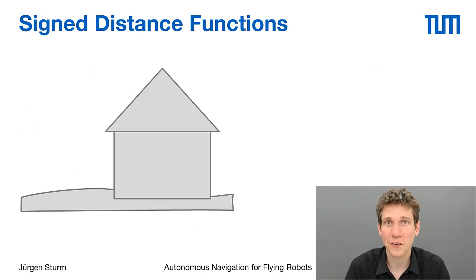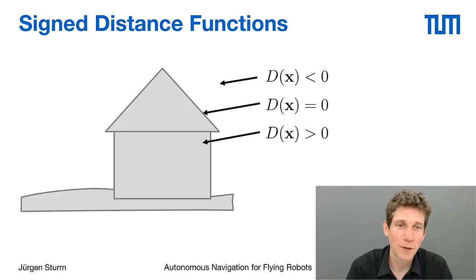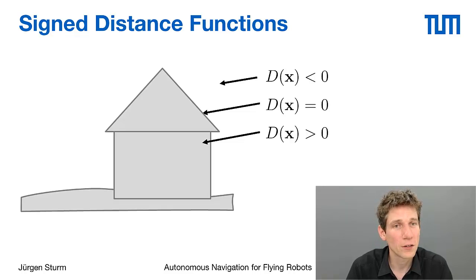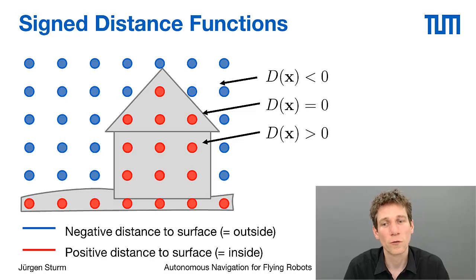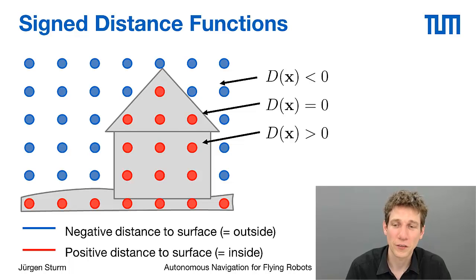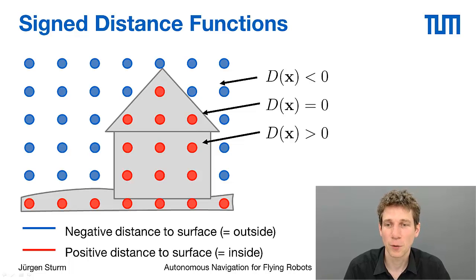Now let's look at what signed distance functions actually are. Imagine we have a house that we want to reconstruct in 3D. We define a function that has the value 0 exactly at the location of the surface, negative values outside of the house, and positive values within. Since we can't represent a continuous function in a computer, we sample this function in a grid — giving us a signed distance grid. The blue cells are the negative cells outside the object, and cells with positive distances are within the object.